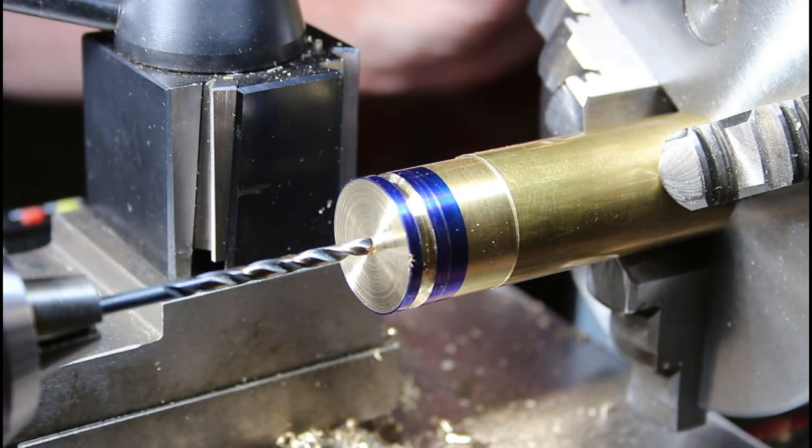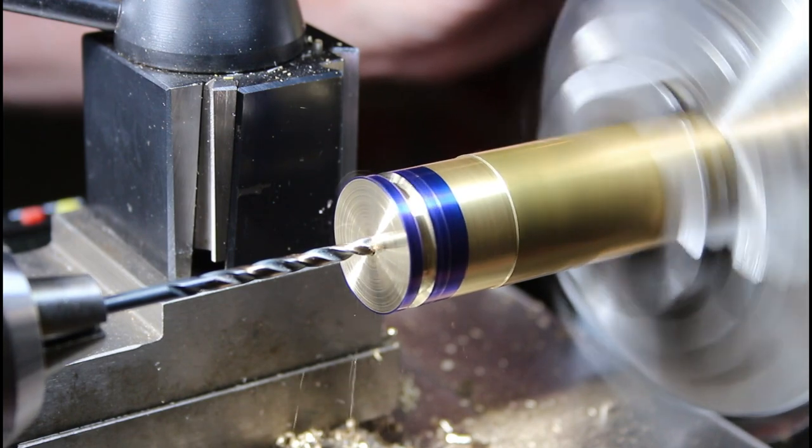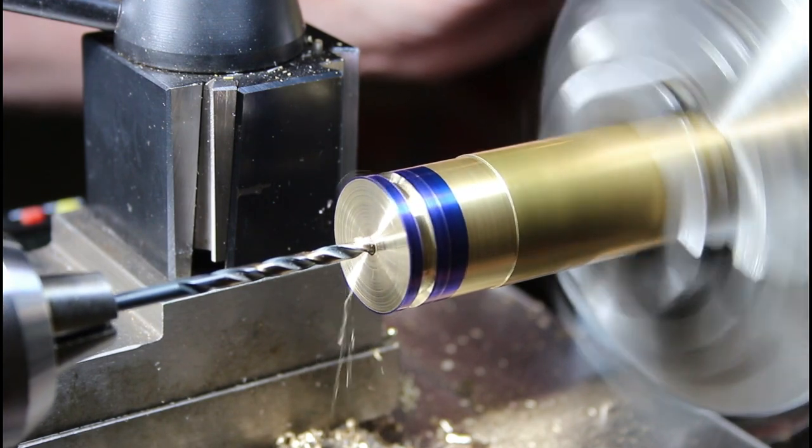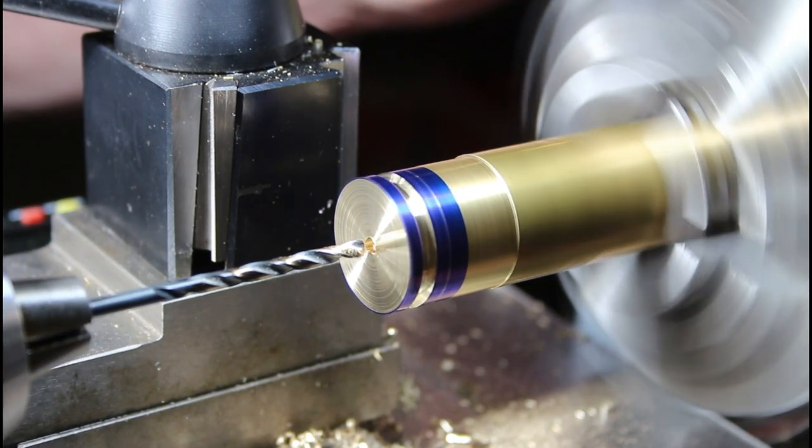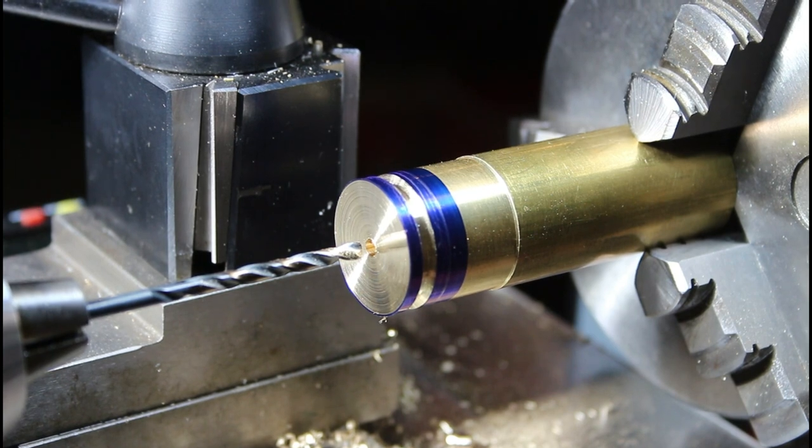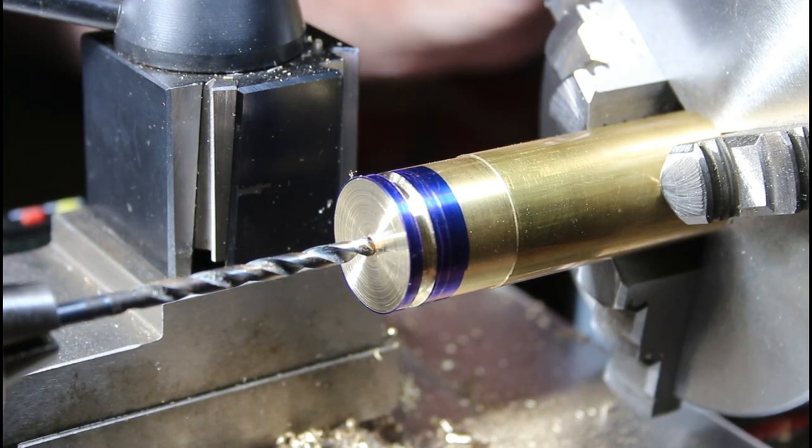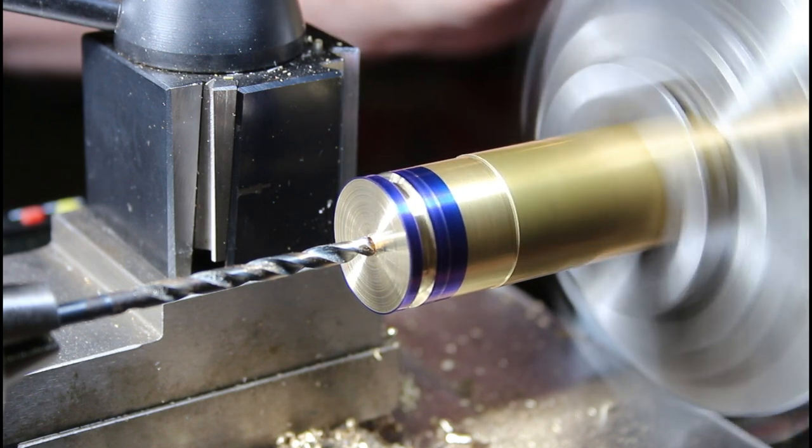I'm going to start with an eighth inch drill bit though and go eight millimeters deep. And then I'm going to step up to the 5/32nd. And here's the 5/32nd bit. Zeroing my DRO and going for eight millimeters.